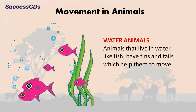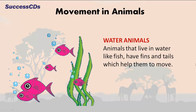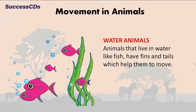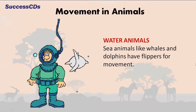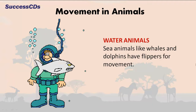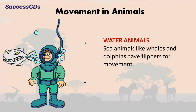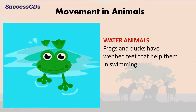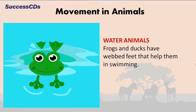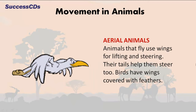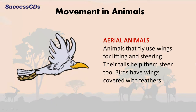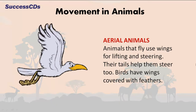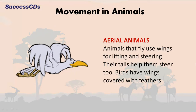Water animals like fish have fins and tails which help them to move. Sea animals like whales and dolphins have flippers for movement. Frogs and ducks have webbed feet that help them in swimming.